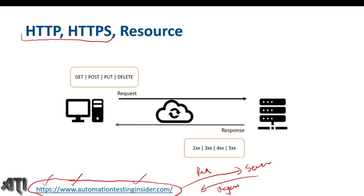A protocol is nothing but a set of rules — it is used for communication between client and server over the network. Now talking about the difference between HTTP and HTTPS: HTTPS uses an extra 'S'. It is more secure than HTTP because it uses another protocol called SSL — Secure Socket Layer. That is why it is more secure, and it uses messages in encrypted format. HTTPS is slightly less fast because it has more features than HTTP.